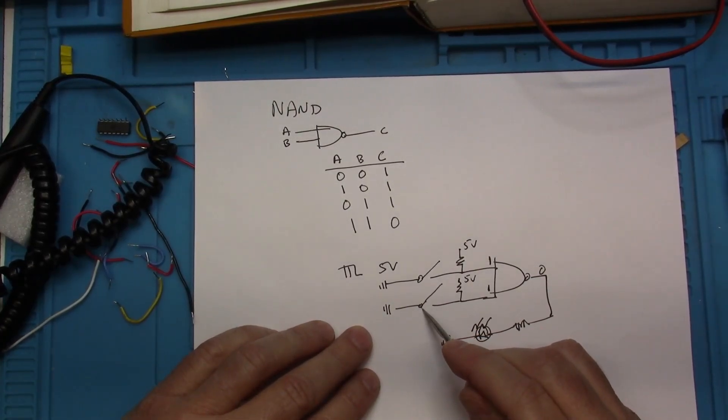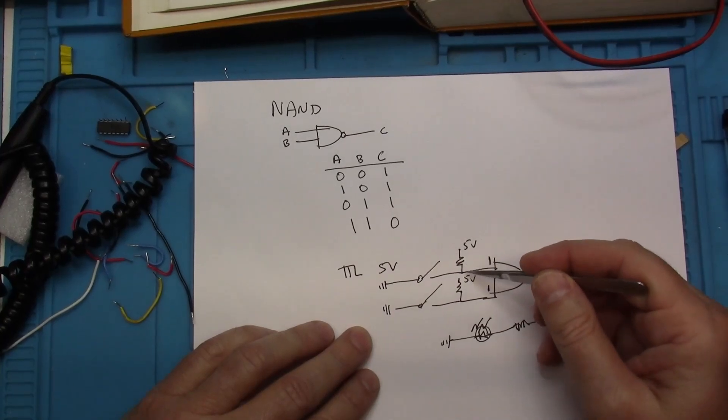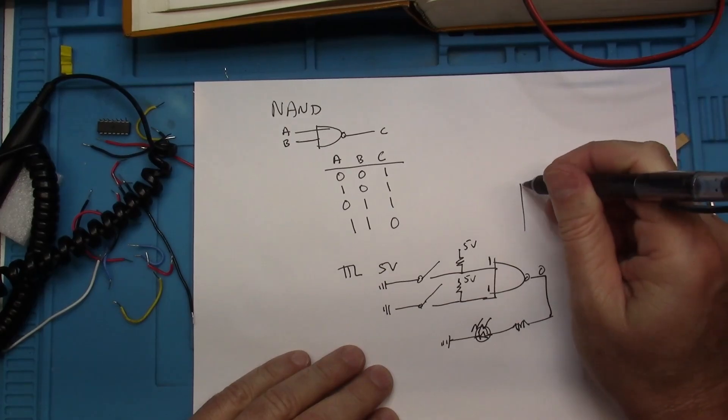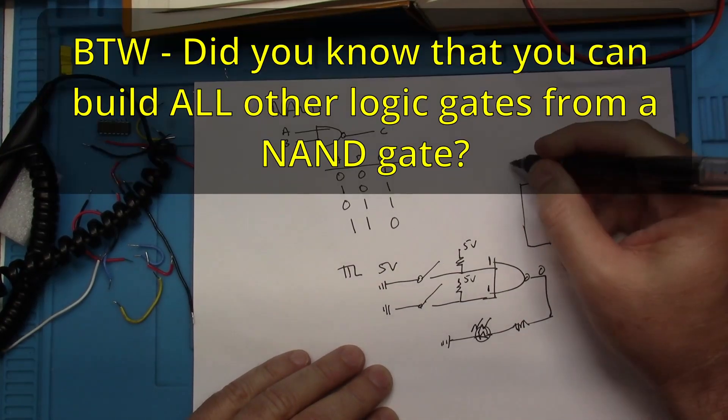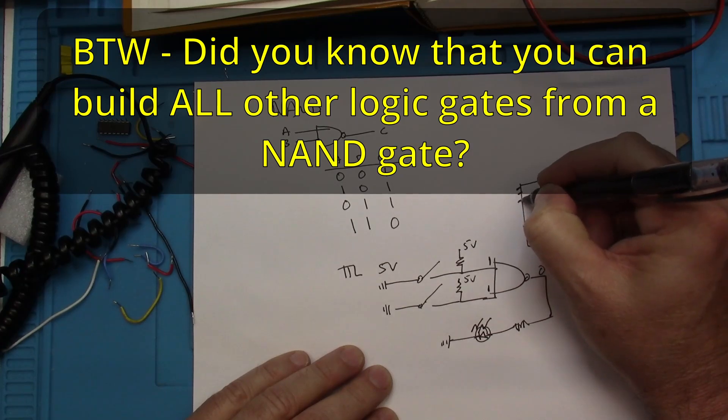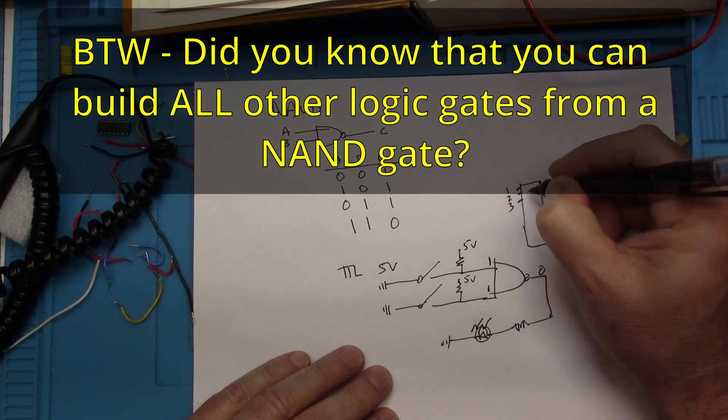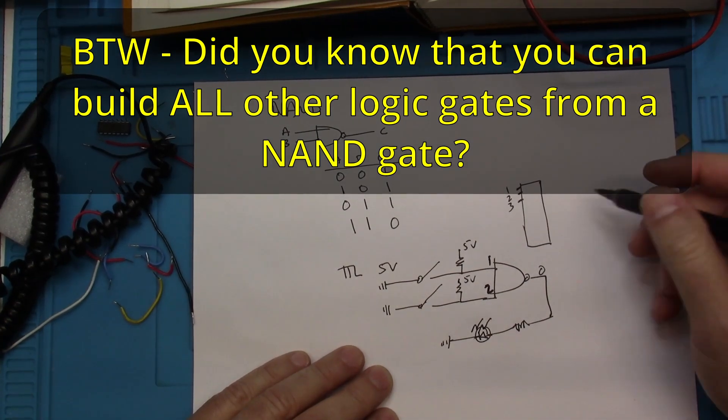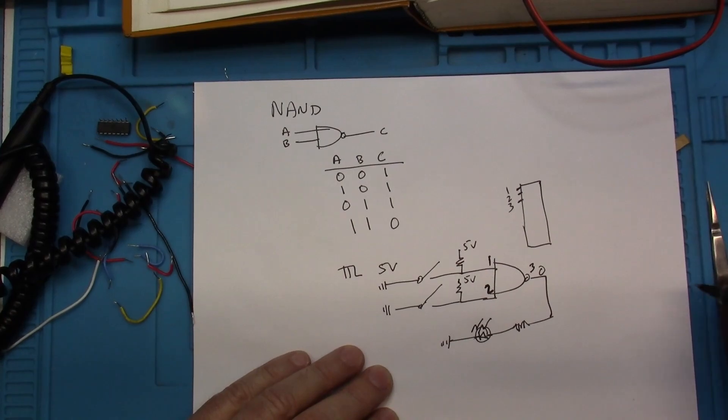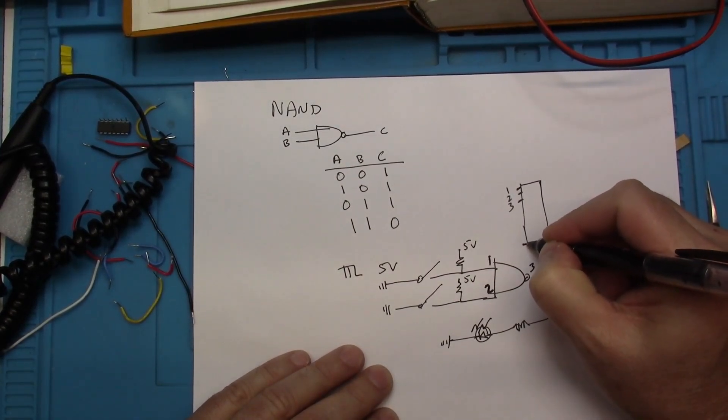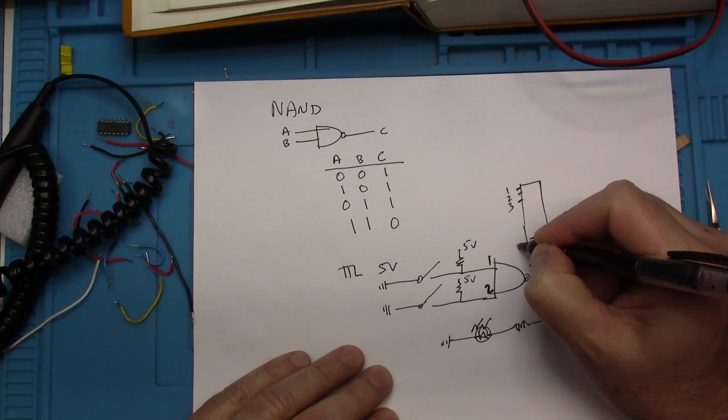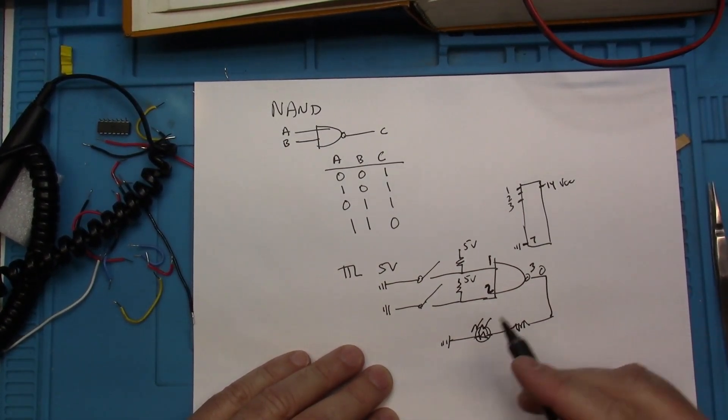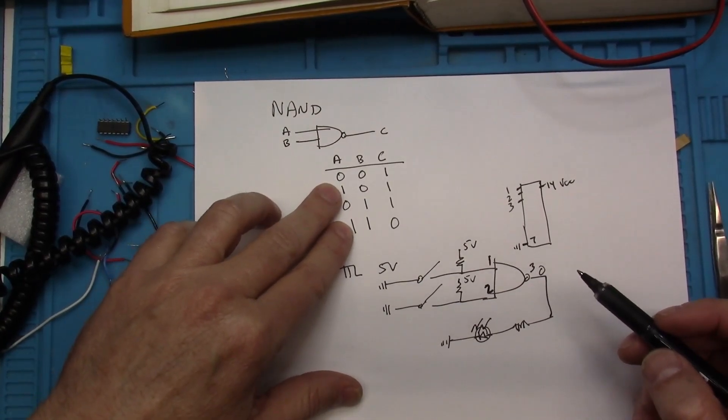A 0 and a 0 give you a 1 with a NAND gate. A 1 and a 0 give you a 1. A 0 and a 1 give you a 1. And a 1 and a 1 give you a 0. So the circuit's going to pretty much look like this. We're going to have two switches tied to ground. We'll have a pull-up. On the IC itself, pin 1, pin 2, and pin 3. 1 and 2 are the inputs, and the output is 3.